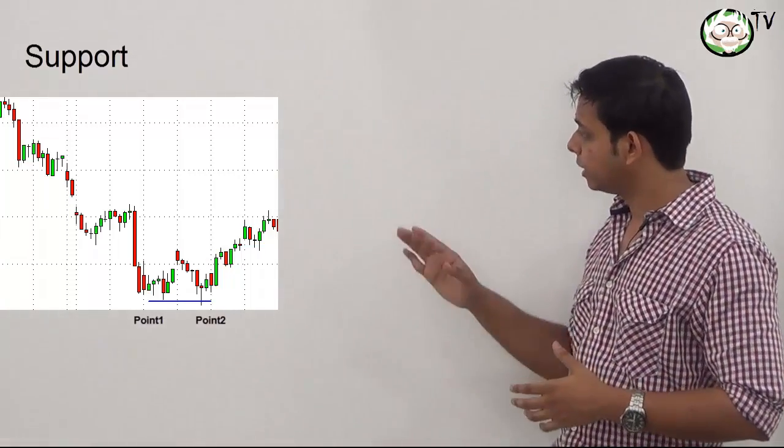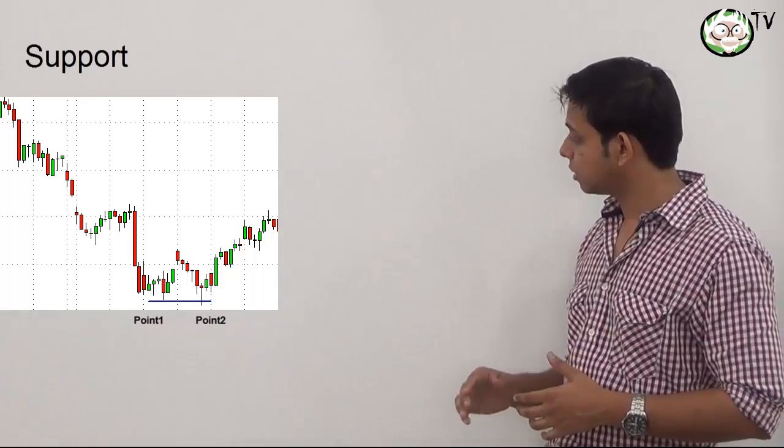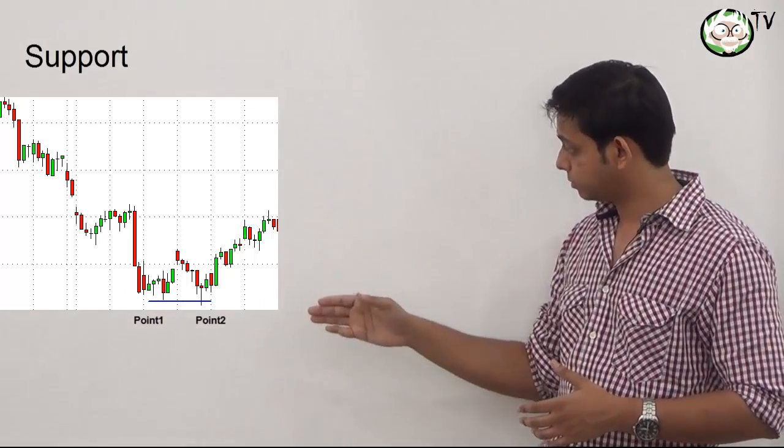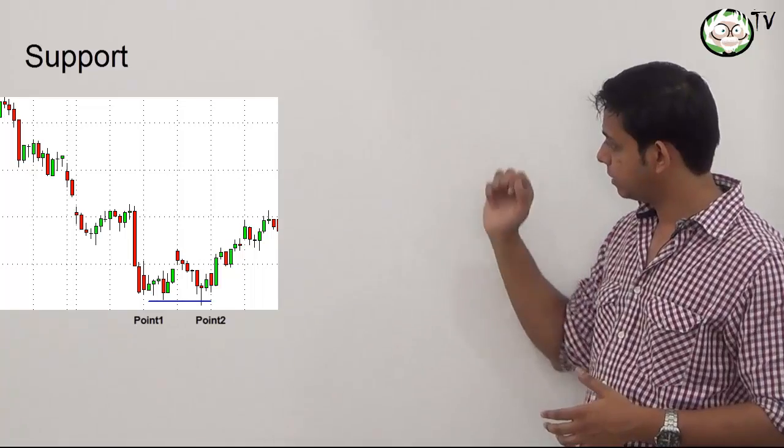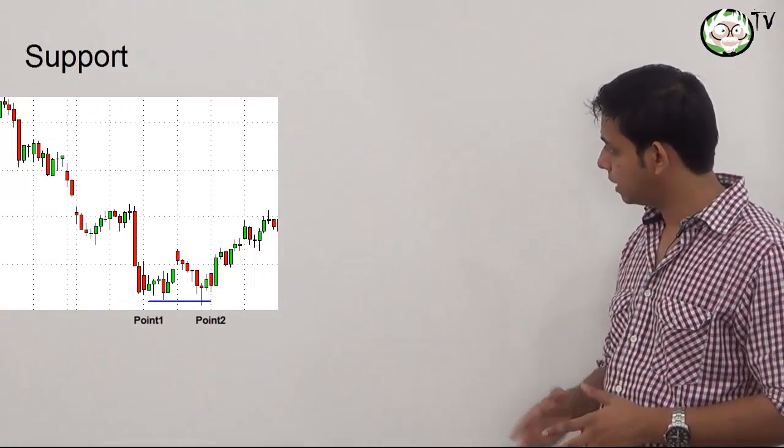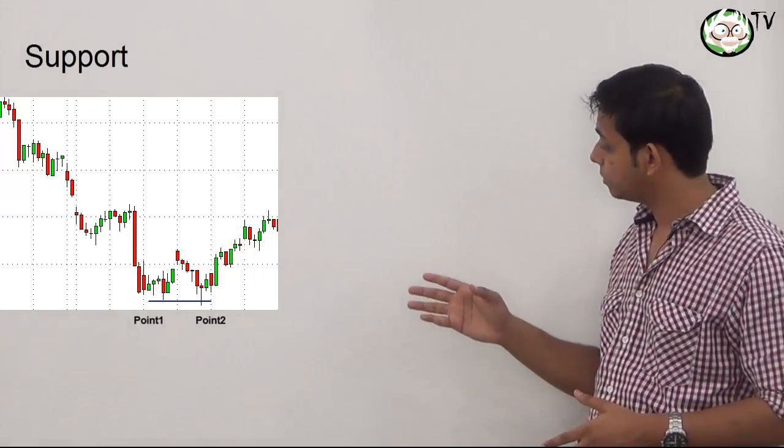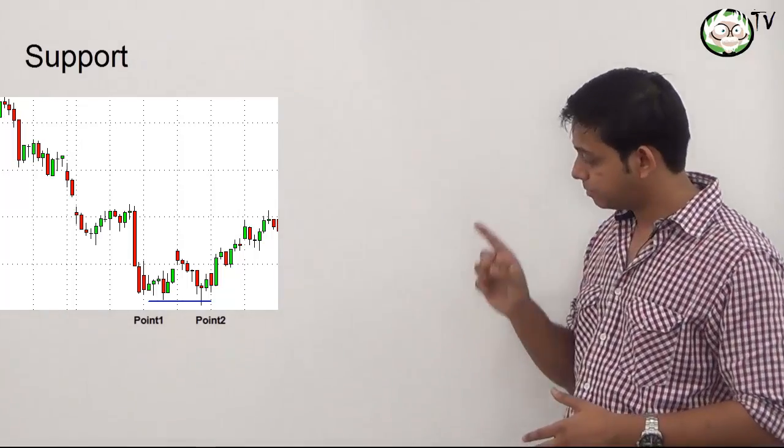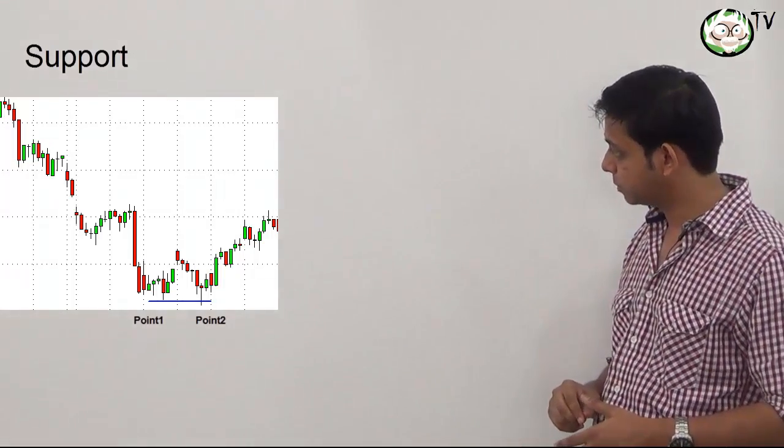Now this is easy to understand with a chart. See that point 1 is our initial support. Prices rallied from there, went down creating a hammer, and then moved up. So that blue horizontal line is our support.